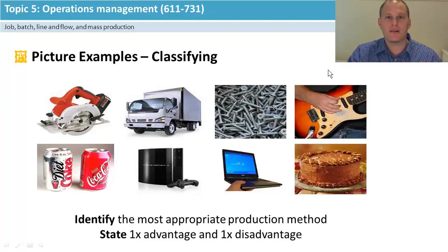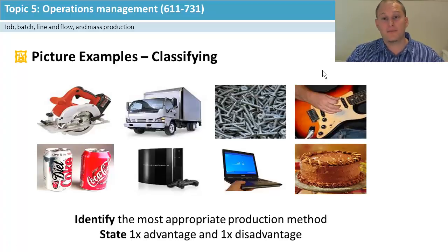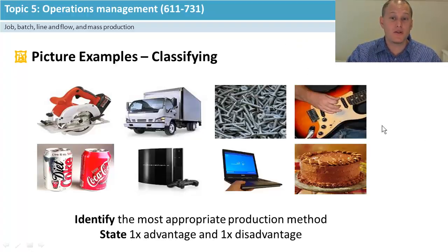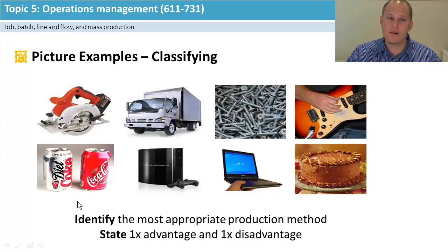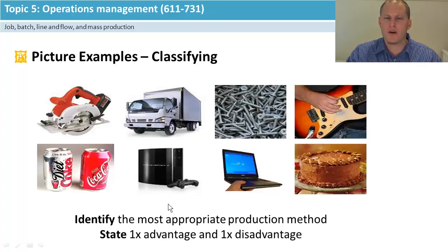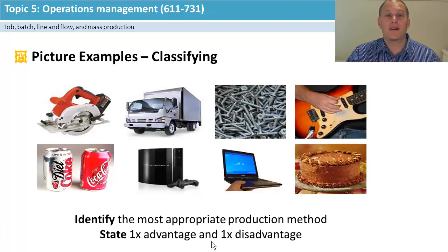For the Stratocaster and Fender guitars, probably job if it's a specialized customer order, or batch when you're doing the different stages — the nut, machine head and so on — in batches before moving along. You could do flow if you want to mass them out, but quality will go downhill. For Coke cans, I'd go with mass. For PlayStations, maybe batch or flow — there are special editions you could argue as job, but most parts are standardized with just the exterior being different.